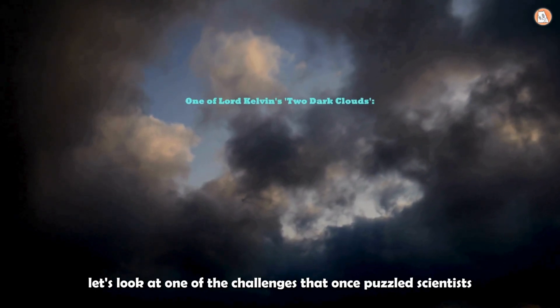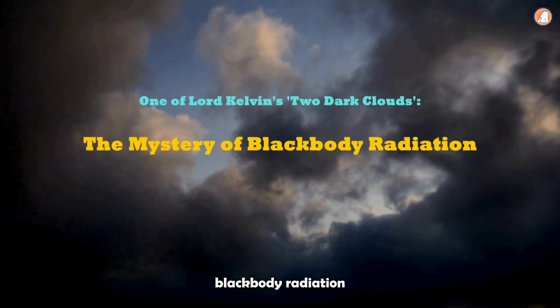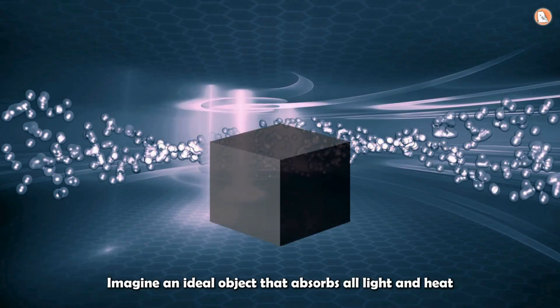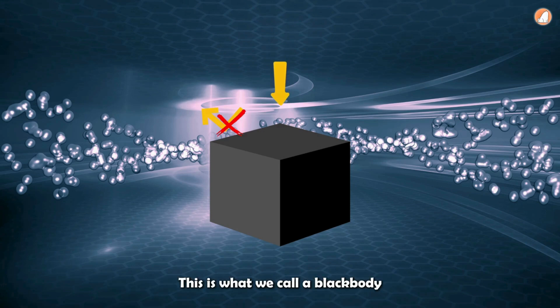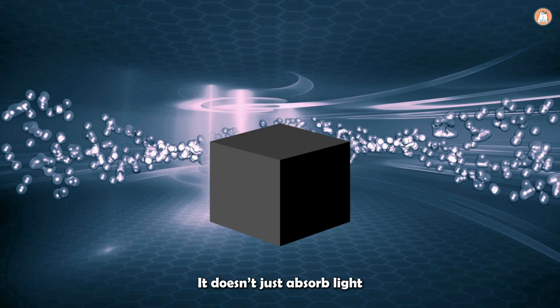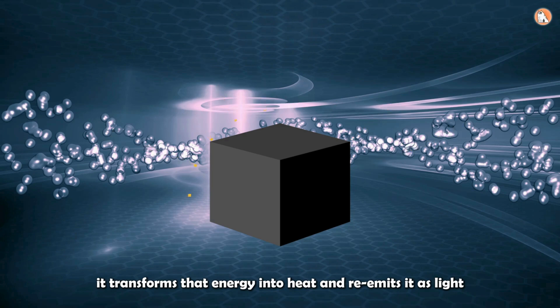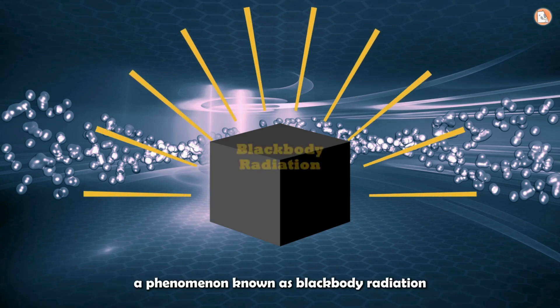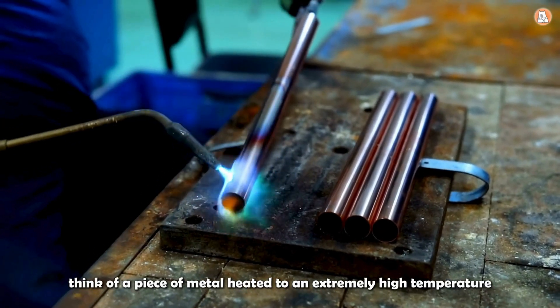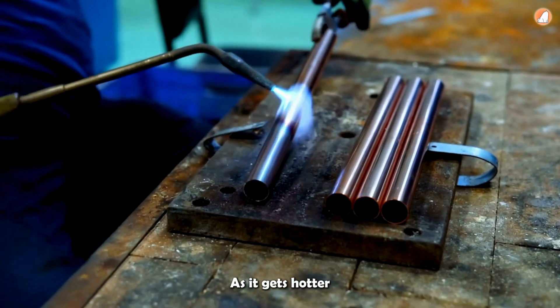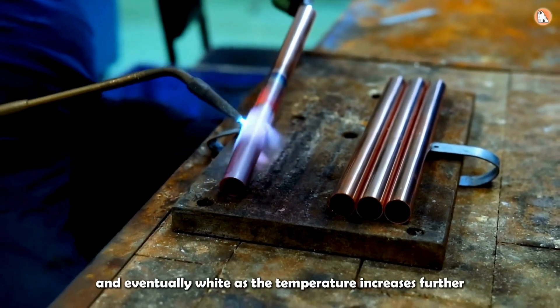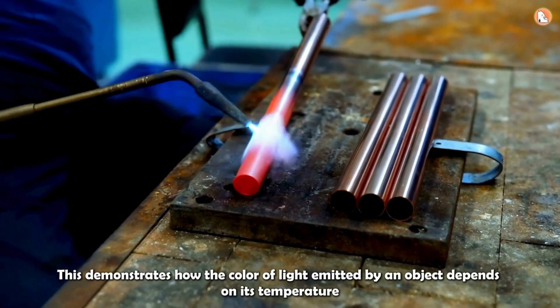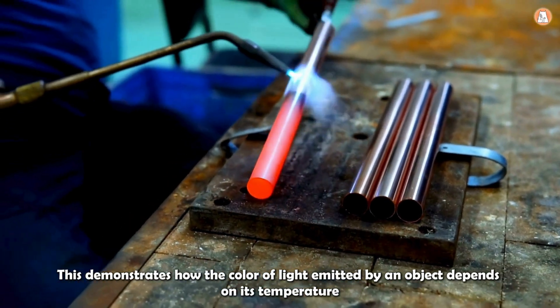Now let's look at one of the challenges that once puzzled scientists: blackbody radiation. Imagine an ideal object that absorbs all light and heat without reflecting any. This is what we call a blackbody. It doesn't just absorb light. It transforms that energy into heat, and re-emits it as light, a phenomenon known as blackbody radiation. For example, think of a piece of metal heated to an extremely high temperature. As it gets hotter, it starts to glow, first red, then orange, and eventually white as the temperature increases further. This demonstrates how the color of light emitted by an object depends on its temperature.